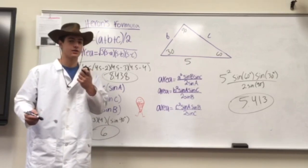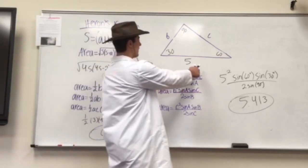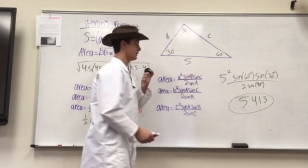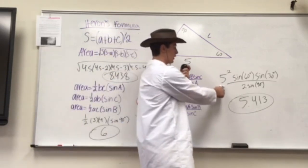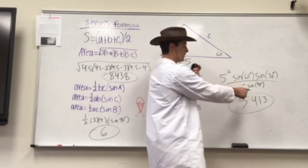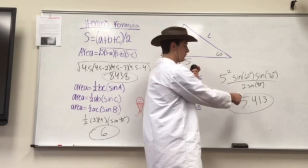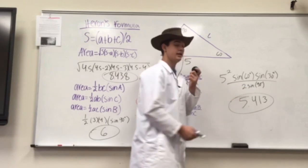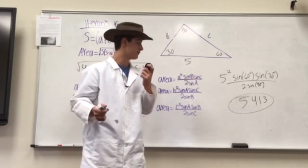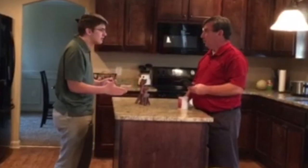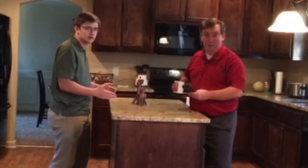And now, we'll do the last area formula. So, now we have three angles and one side. So, we're going to take 5 squared sine 60 degrees times the sine of 30 degrees over 2 sine of 90 degrees. And you end up getting 5.413. Duh, duh, duh! Math! Yeah, we'll be right back.